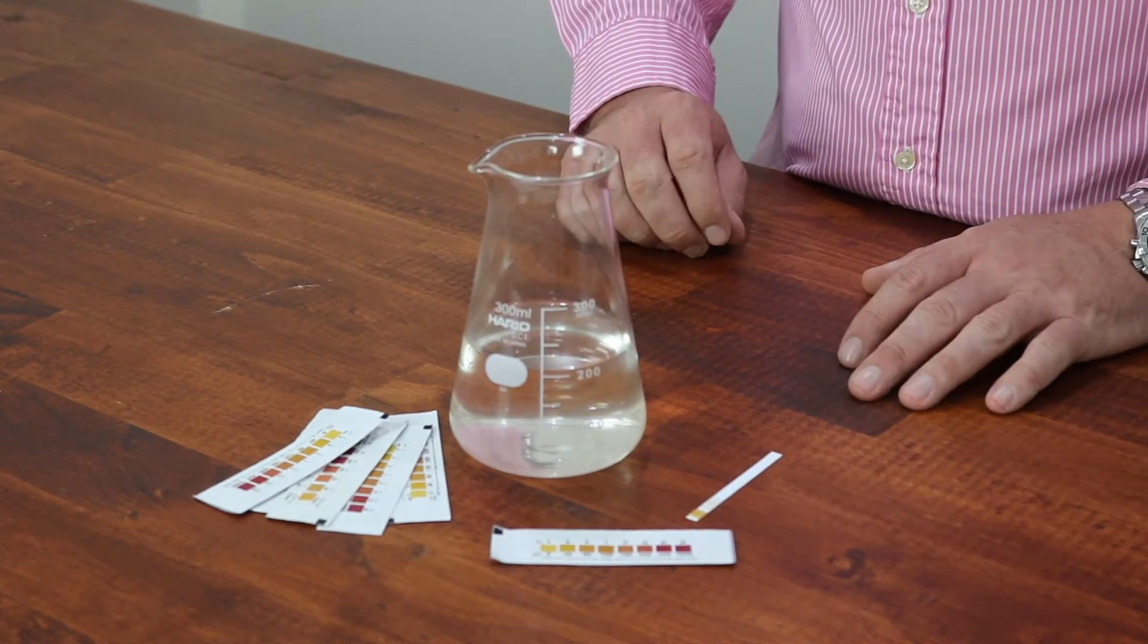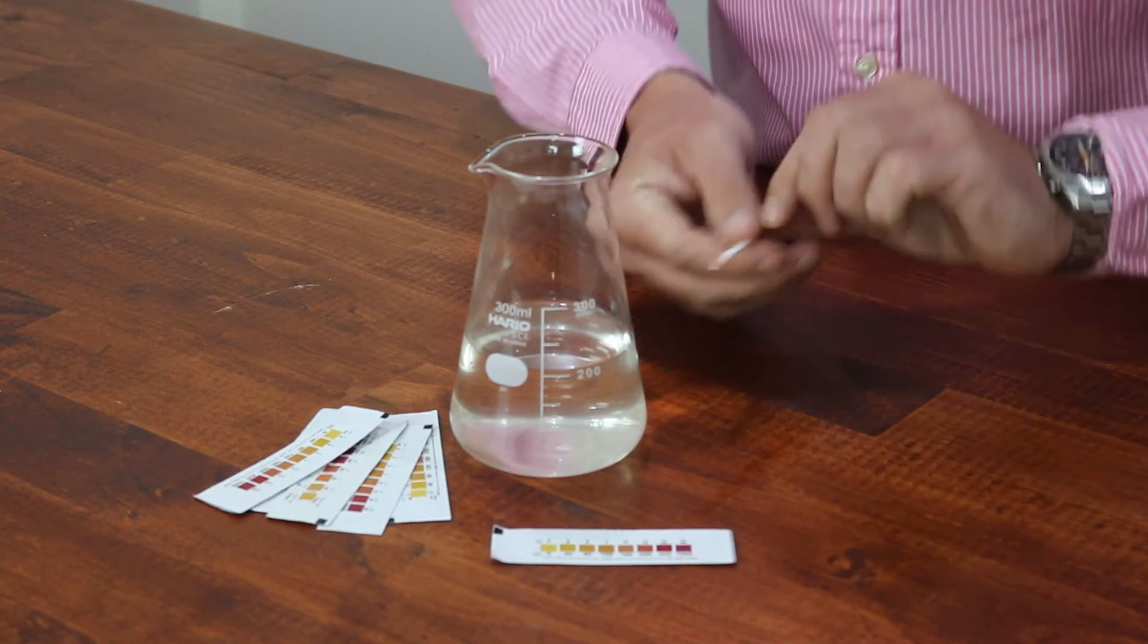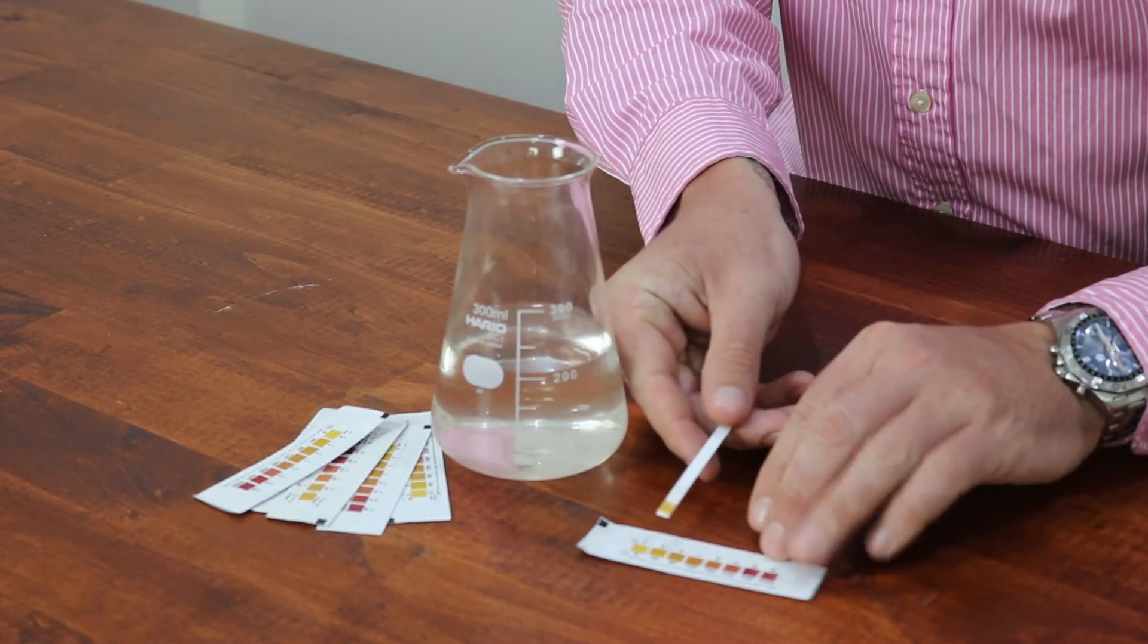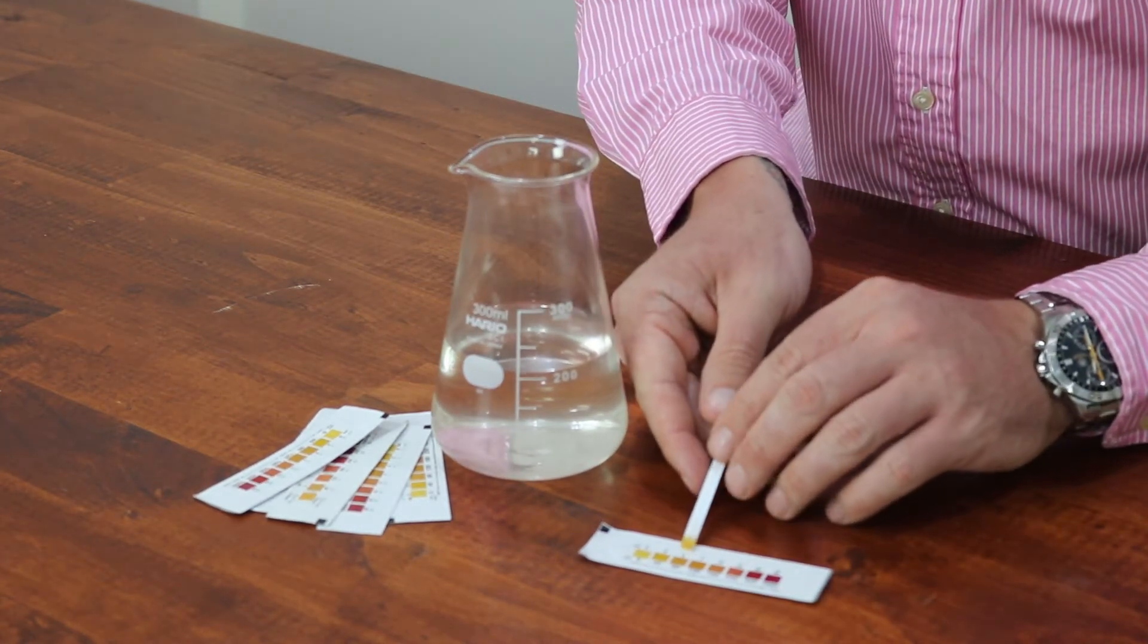Now that we've allowed the strip to rest for 20 seconds, we take the strip and put it against the color indicator chart and we put it up close to the closest color matching block that you have there.